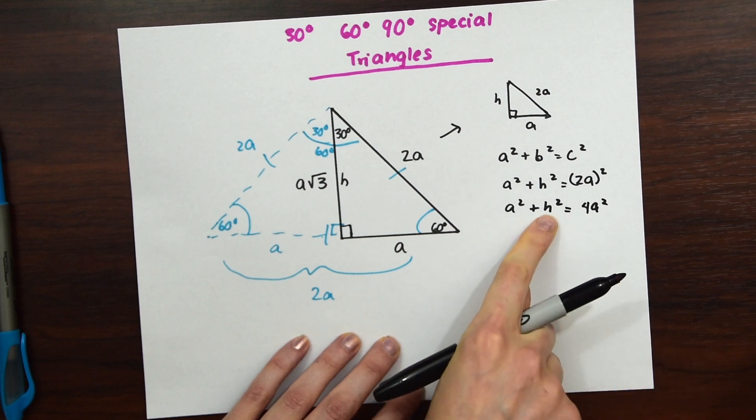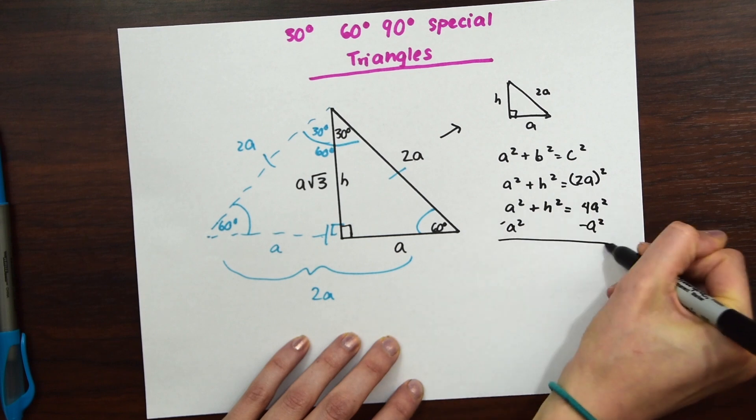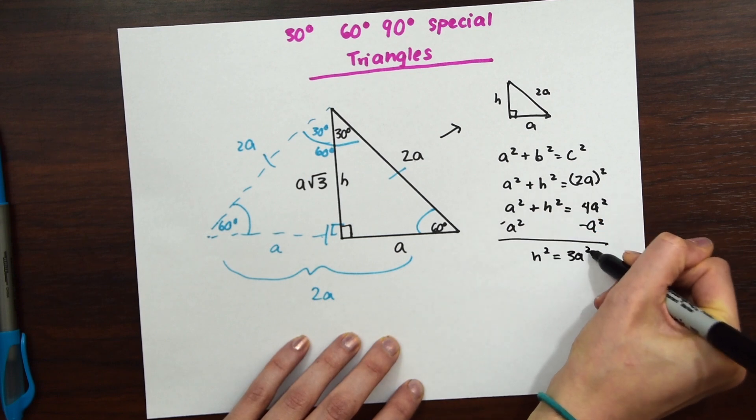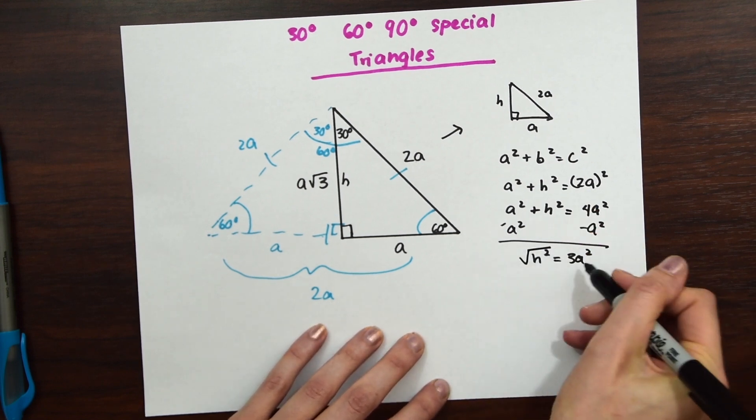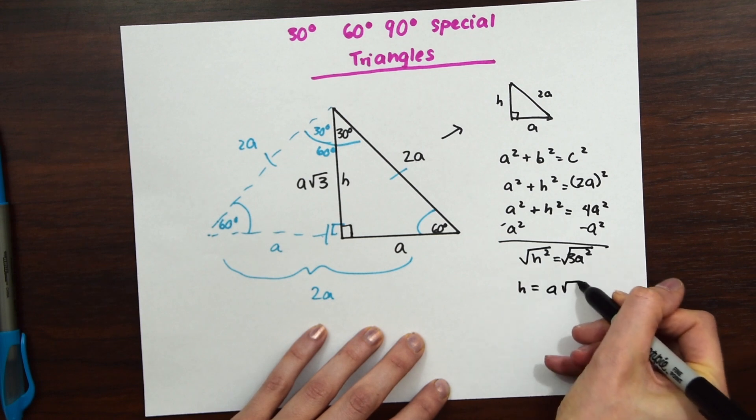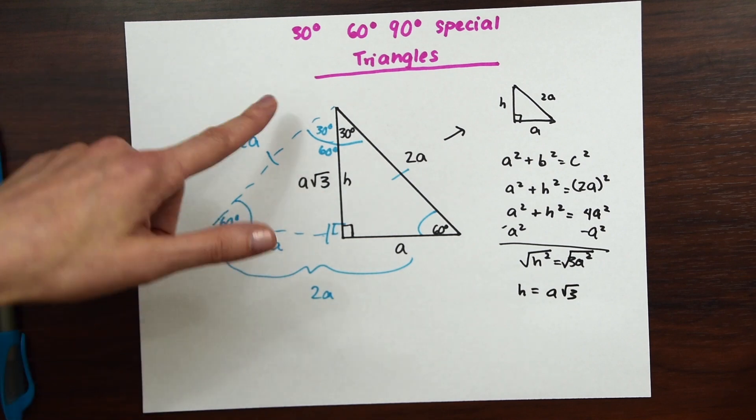So now we just want to get H alone. So we're just going to subtract A squared from both sides, and we end up with H squared equals 3A squared. So we're almost done. We just want to find that H. So we're just going to take the square root of both sides. And when we do that, we get H is equal to A rad 3.